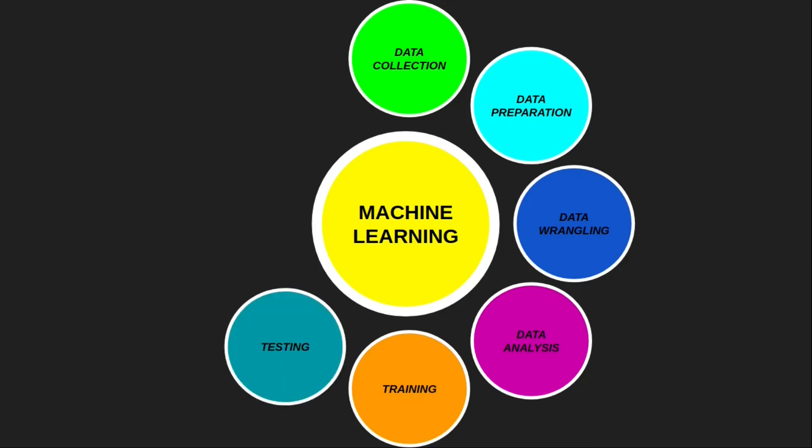The next step is testing the model. Once the model has been trained on a given dataset, we test the model with test data that was not given to the machine learning algorithm during training — data we have kept separately to test the model. If the test results are fine, it goes to the next step. If not, it goes back to data analysis, and we analyze and train the model again. If the model has better accuracy on the test set, it proceeds to the next step.